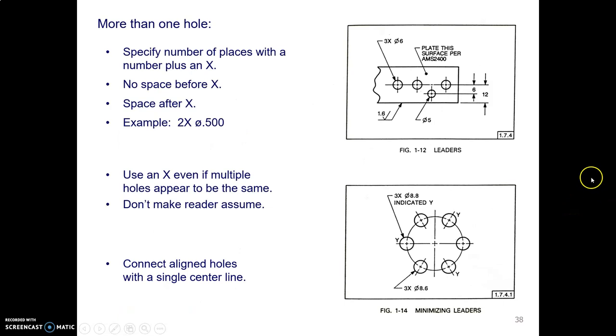And just a reminder, when you have more than one of a thing, you need to be explicit about how many of those things you have. So for example, if there are two holes that are both half an inch in diameter, you must say two times diameter, one half.